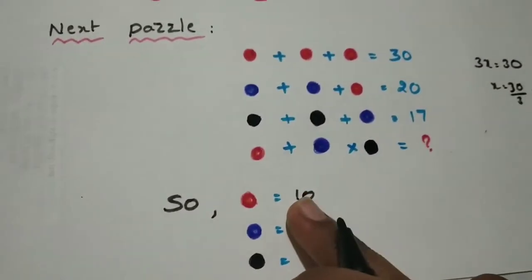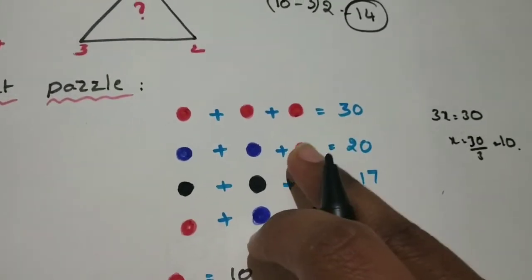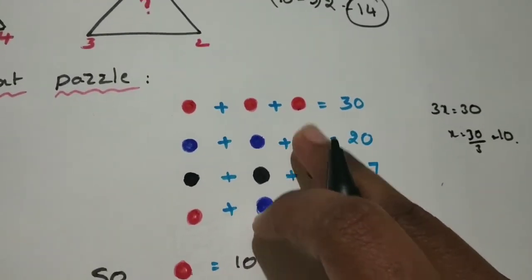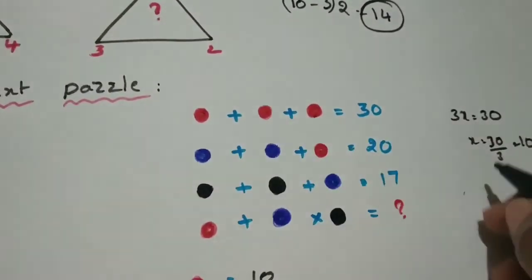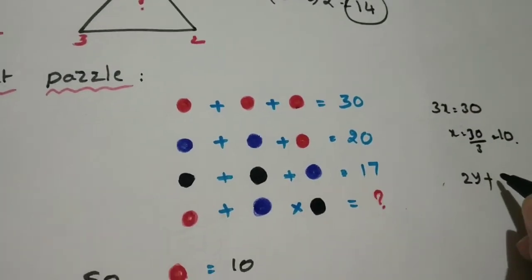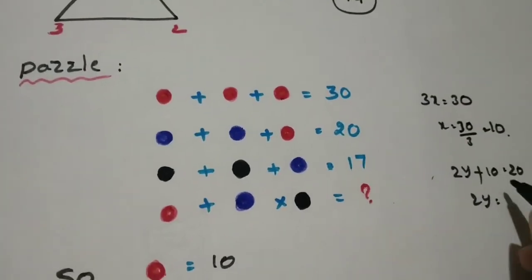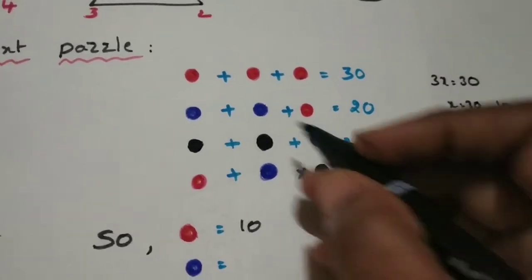So you find one value, next you find another value. Substitute that value in here. Red dot is equal to 10. Here you are putting 10, these two values you don't know, let it be y. y plus y, 2y plus x, how much you know? 10, that is equal to 20. 2y is equal to 10, so y is equal to 5. That means blue dot value is 5.